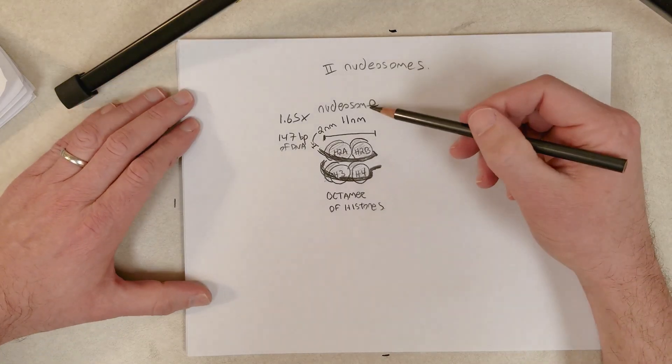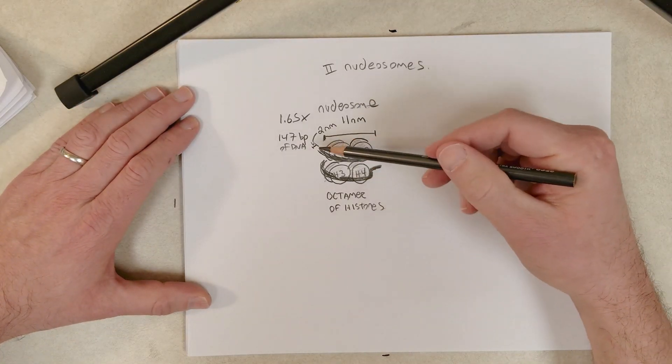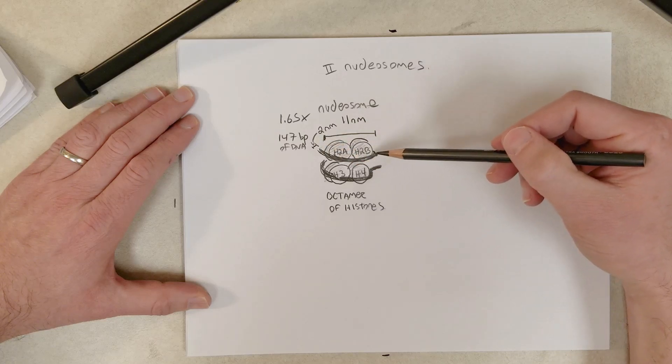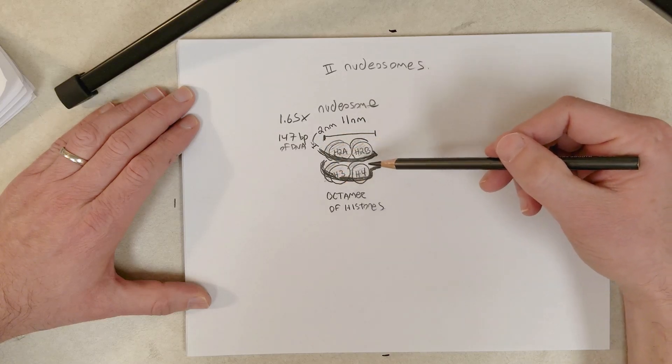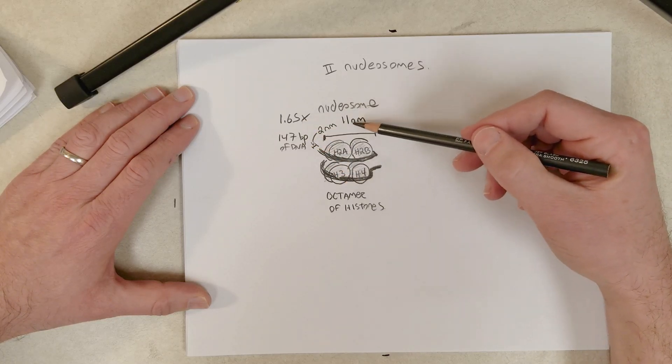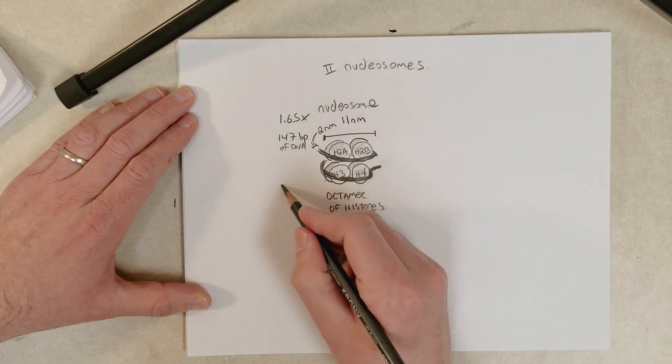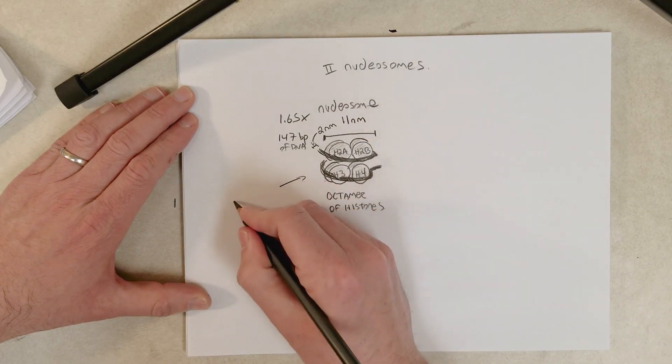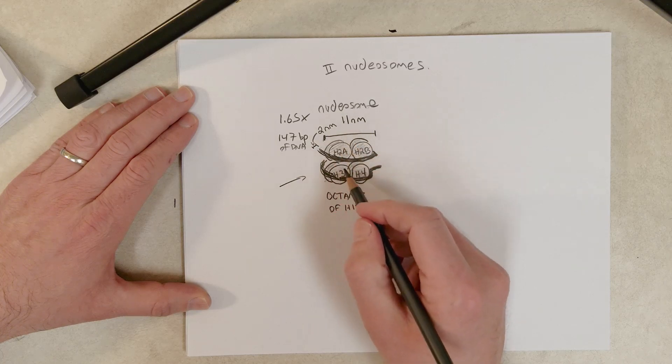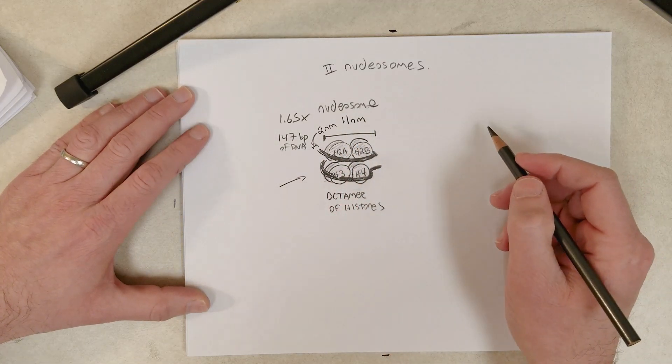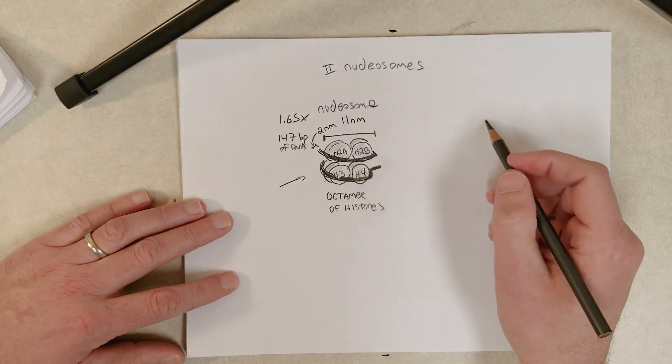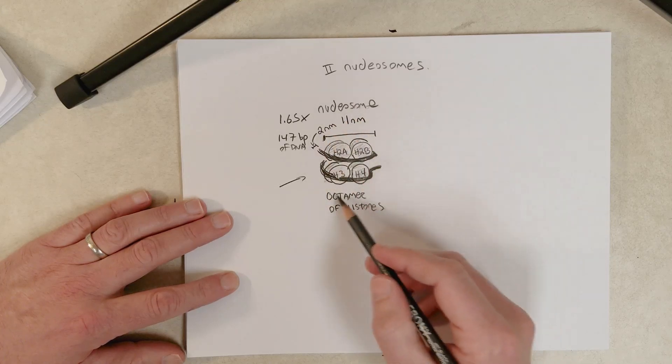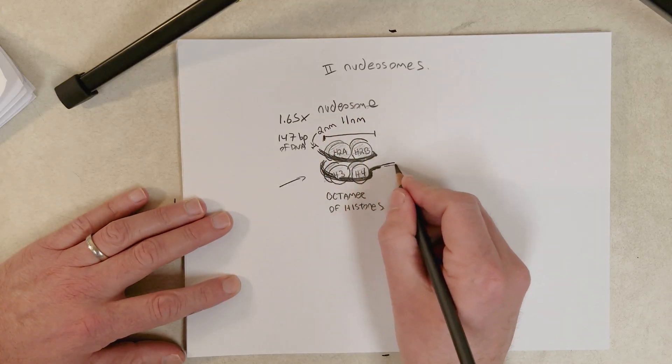So we're going to call this the nucleosome, the 147 base pairs of DNA wrapped around the octamer of histones 1.65 times. We're calling this the nucleosome. Some textbooks might call this the nucleosomal core particle, but we will consider this the nucleosome. Now there's one other component.